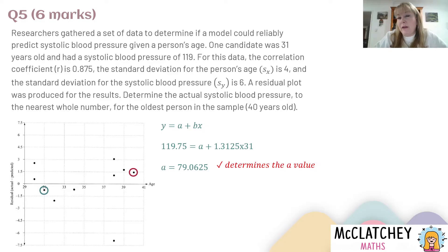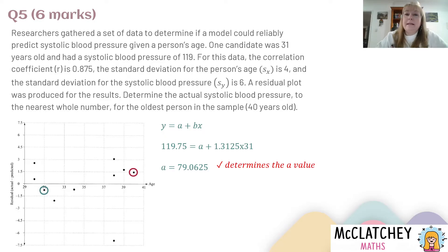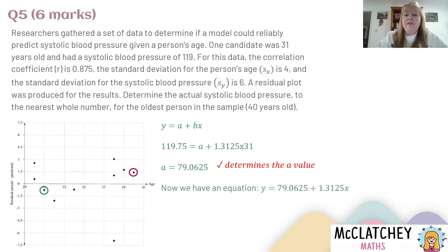Working out that predicted y value earned us a second mark — we're two out of six. Now we use that to develop our equation. We have y equals a plus bx, we know b, and now we know x equals 31 and the predicted y equals 119.75. Substituting those in, we work out that the value of a is 79.0625 — that would have been our third mark.